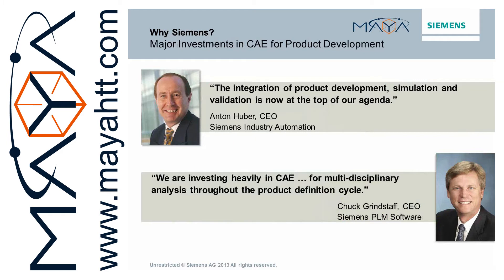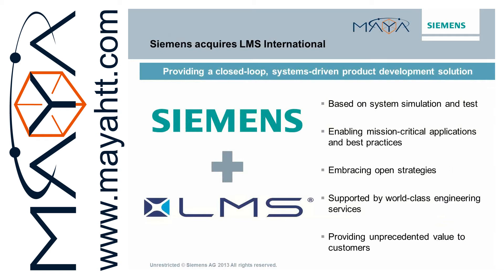Siemens views simulation as a strategic investment area, and so it is investing heavily in CAE. Anton Huber, CEO of Siemens Industry Automation, states: 'The integration of product development, simulation, and validation is now at the top of our agenda.' And Chuck Greinstaff, CEO of Siemens PLM, says: 'We are investing heavily in CAE for multidisciplinary analysis throughout the product definition cycle.' As an example of Siemens' commitment to CAE, in 2013 Siemens PLM software acquired LMS International, a leading global provider of test and simulation software. The acquisition of LMS has enabled Siemens to extend their knowledge base in systems engineering, simulation, and test, as well as close the loop between product development and test, improving the fidelity of simulations throughout the development process and reducing the need for multiple physical prototypes.